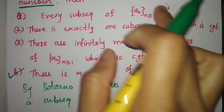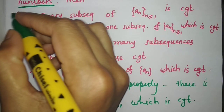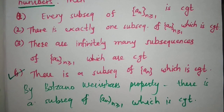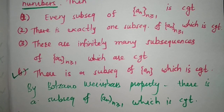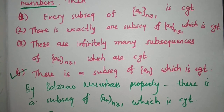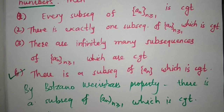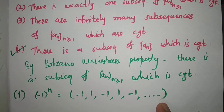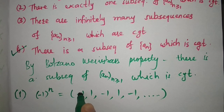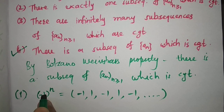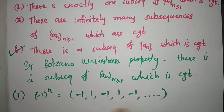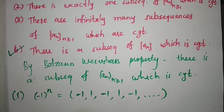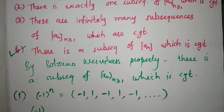Now we cannot say that every subsequence of a_n is convergent. For a counterexample for option 1, take the sequence (-1)^n, that is: -1, 1, -1, 1, and so on. Note that every sequence is a subsequence of itself, so this sequence is a subsequence of (-1)^n, but this subsequence is not convergent.